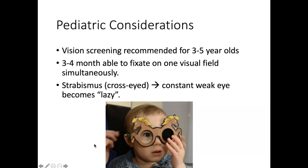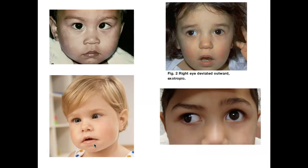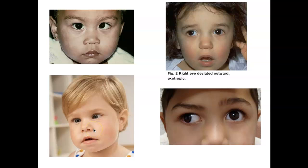Pediatric considerations: vision screenings typically begin between ages three and five. A three- or four-month-old is usually able to fixate on something in the visual field. Strabismus — being cross-eyed — can be due to weak eye muscles, leading to what's called a lazy eye. It can often be treated with special glasses; in worse cases, surgery may be required to correct it in children. Images here show examples of eyes that aren't symmetrical, with one eye wandering, showing both esotropia and exotropia.